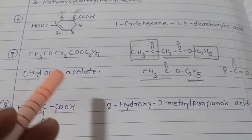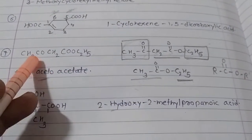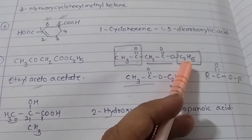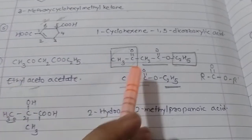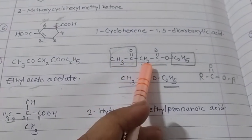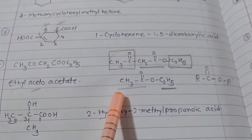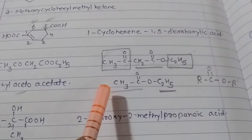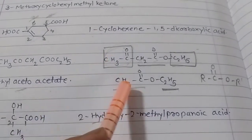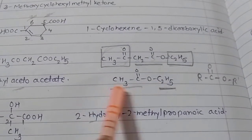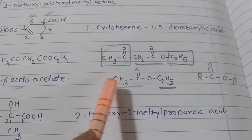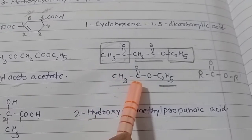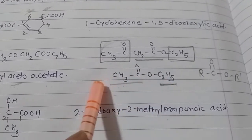The next example: C2H5 is for ethyl, and this is aceto with two carbons, so acetate. It is an ester — RCOOR'. So this one is ethyl acetate: ethyl for C2H5 and acetate for CH3COO. Two carbons are for acetate, so ethyl acetate.